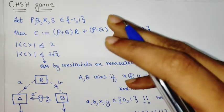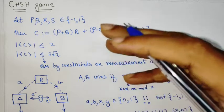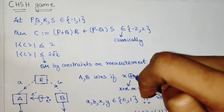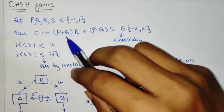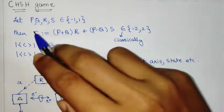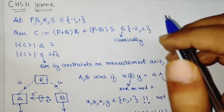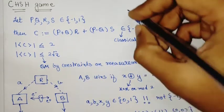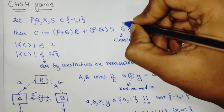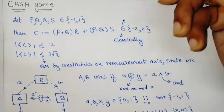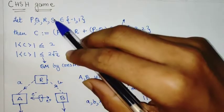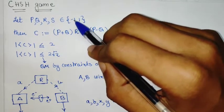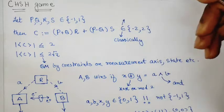Suppose P, Q, R, S are four random variables that can take discrete values minus one or plus one. We define a new random variable in this particular combination of these four, and it takes a value minus two or plus two. This is in the EPR sense where these are treated as random variables that will either be minus one or plus one — deterministic.